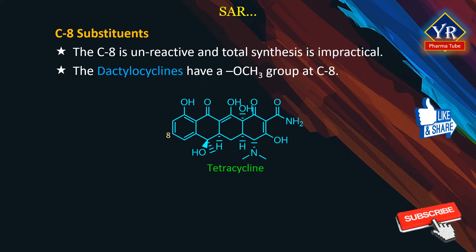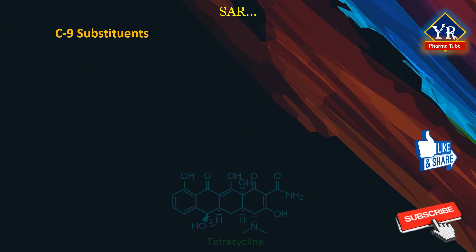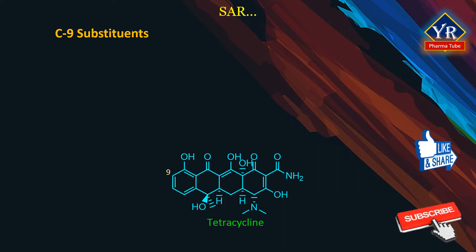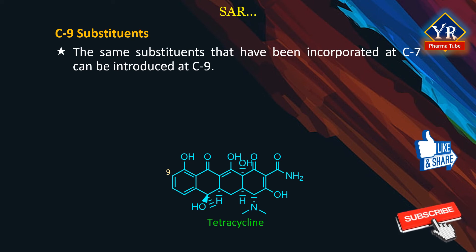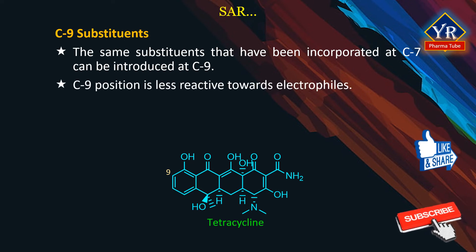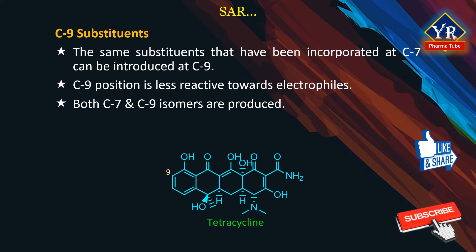C9 substituents. The C9 modifications have followed in parallel with those at C7 in that aromatic electrophilic substitution has been utilized extensively. Consequently, the same substituents introduced at the C7 position have also been introduced at C9 for the most part. However, the C9 position is somewhat less reactive towards electrophiles as a result of electronic and steric factors caused by the presence of the C10 phenol moiety. In many cases, both C7 and C9 isomers are produced under reaction conditions and must be painstakingly separated. Oxytetracyclines are particularly problematic in electrophilic substitution reactions which introduce either a C7 or C9 substituent.